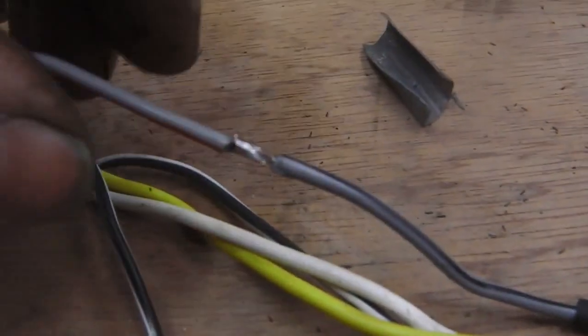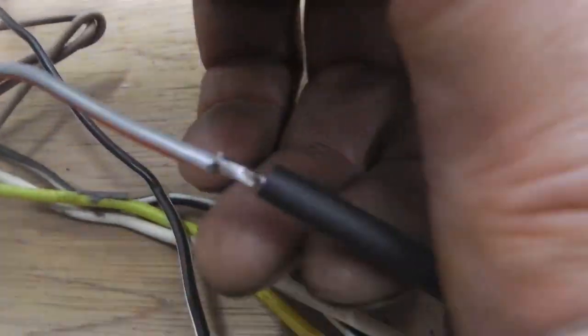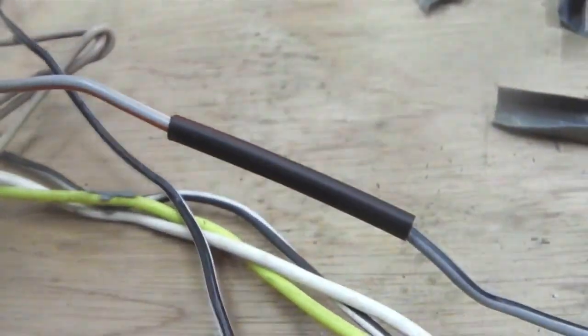Okay, that butt solder joint done. Slide the sleeves, slide the sleeving over, get ready for heat shrinking that.